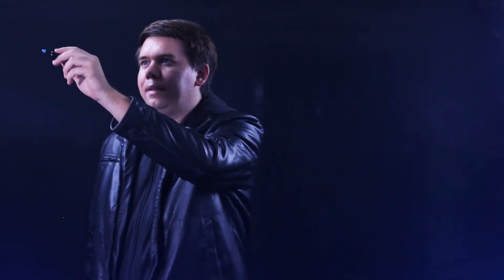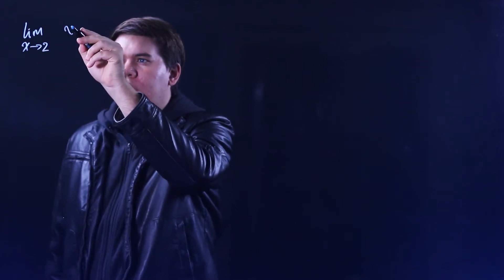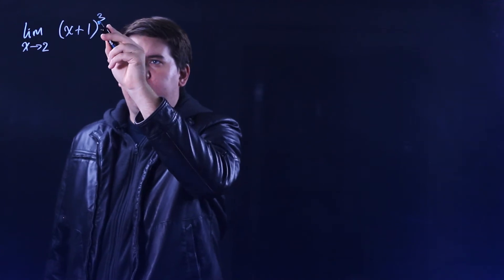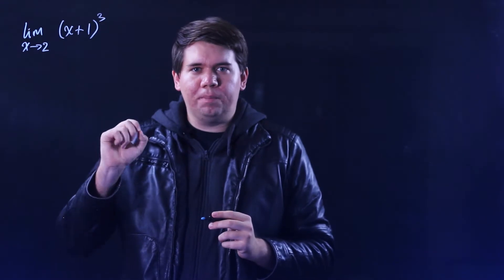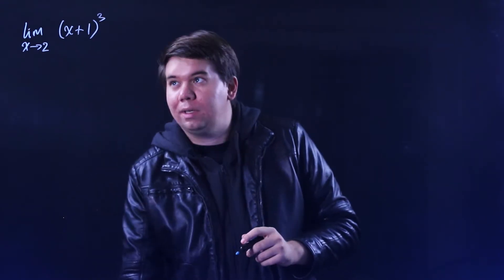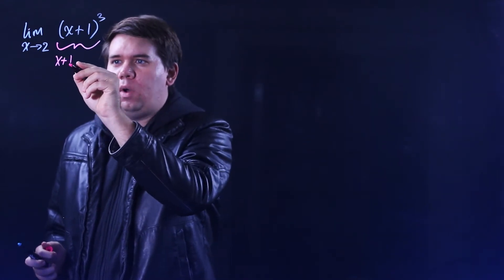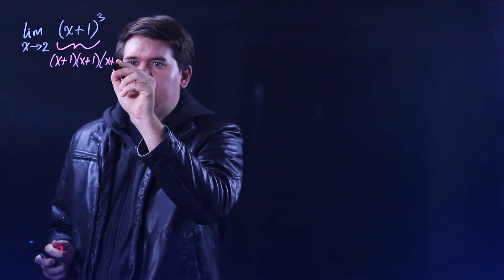I'd like to give some examples of using the limit laws to help us calculate limits. The first example is the limit as x approaches 2 of (x+1) to the third power. When you look at (x+1) to the third power, you should think that's secretly the same thing as (x+1) times (x+1) times (x+1).